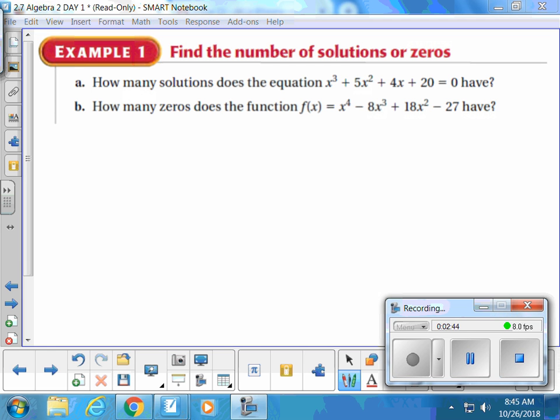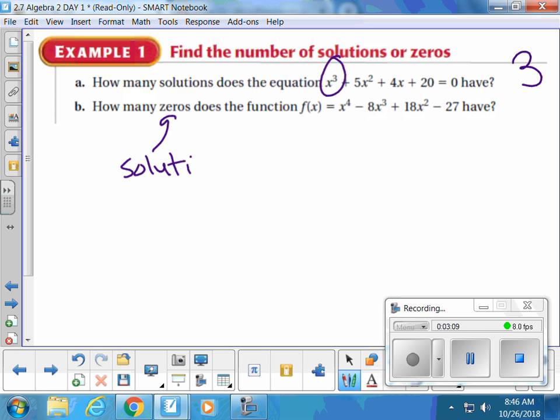Part A, they are saying how many solutions would this equation have? Anybody know? Alexis? It's three. How did you get that? Because your exponent value is three. Yeah, it's the highest exponent that she found. It was a three, so the degree was a three and there'd be three solutions. Part B, how many zeros would this function have? The word zero means the same exact thing as solution, which means the same exact thing as x-intercept. How many solutions would this one have? Nathan? Four. How'd you get that?